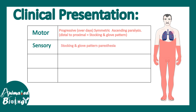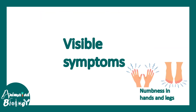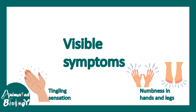Sensory system involvement is presented by a stocking and glove pattern of paresthesia. There is also autonomic dysregulation and areflexia. Visible symptoms include numbness in hands and legs, which corresponds to the motor modality, and tingling sensation in hands and feet, which corresponds to the sensory modality.